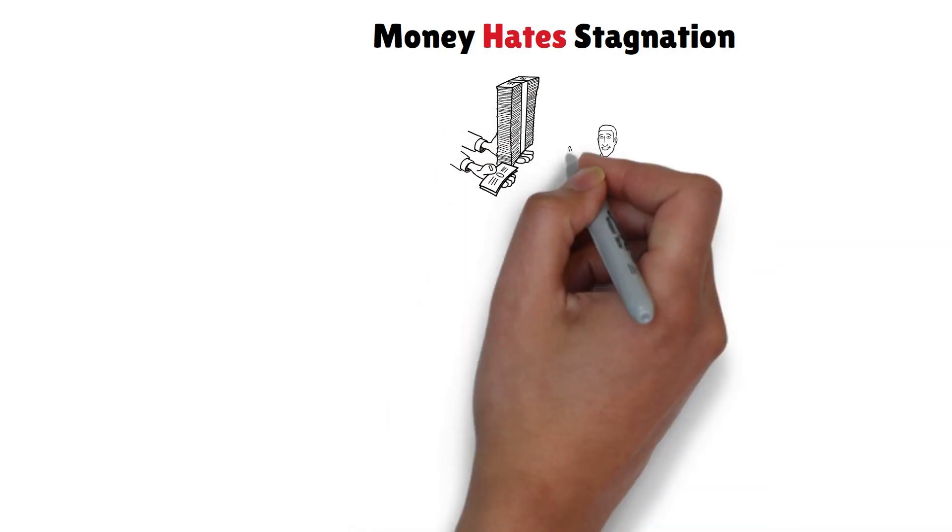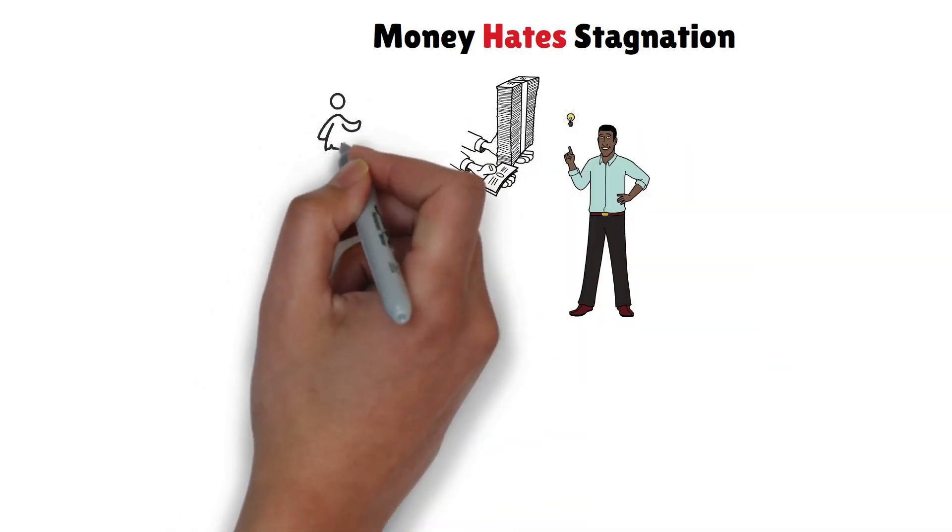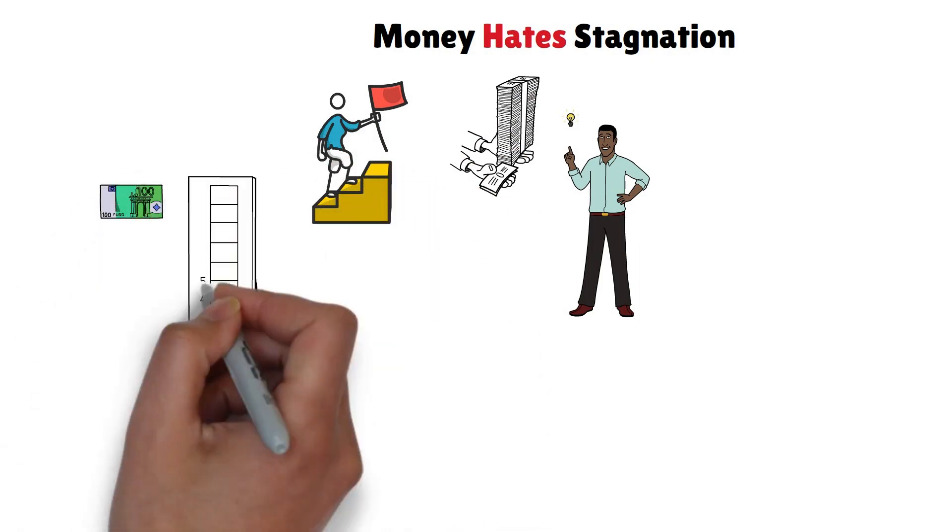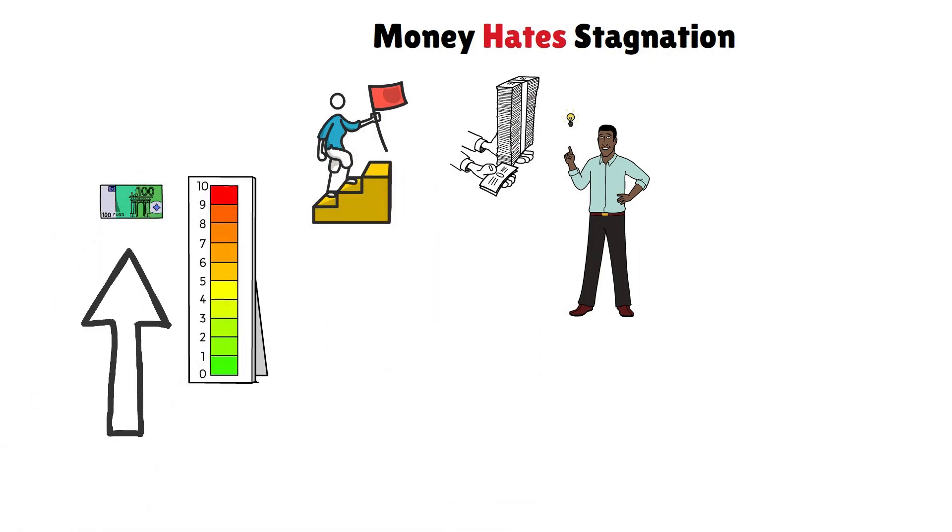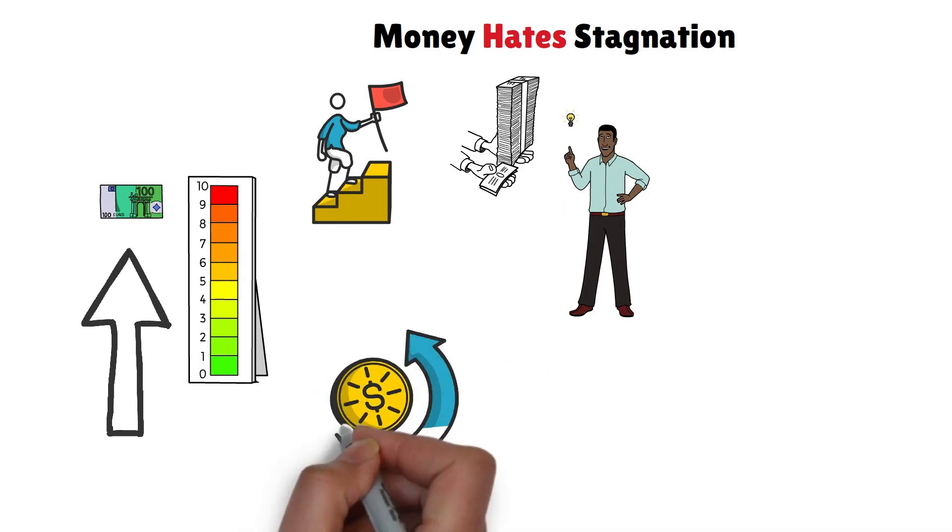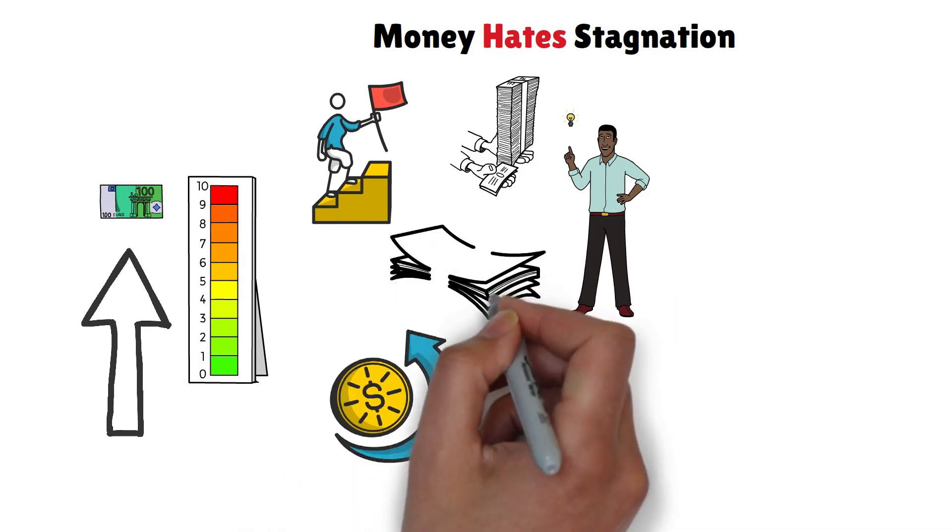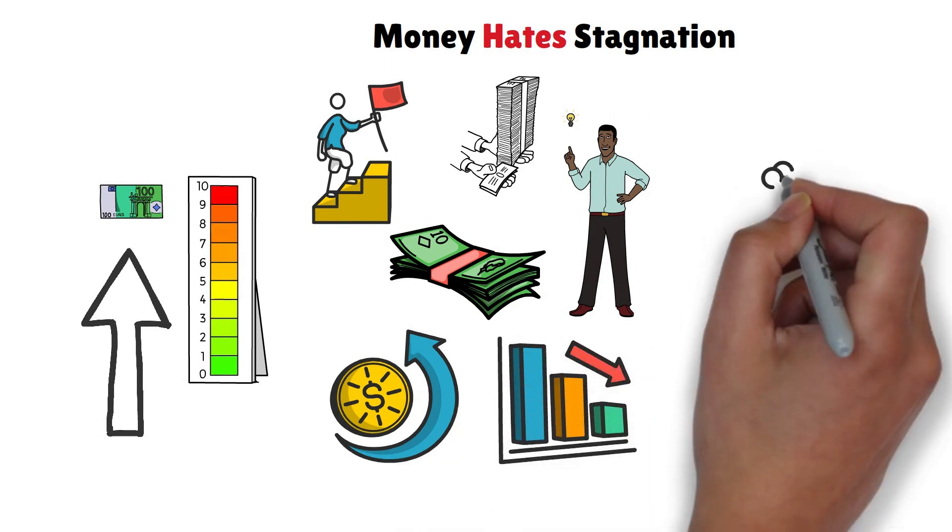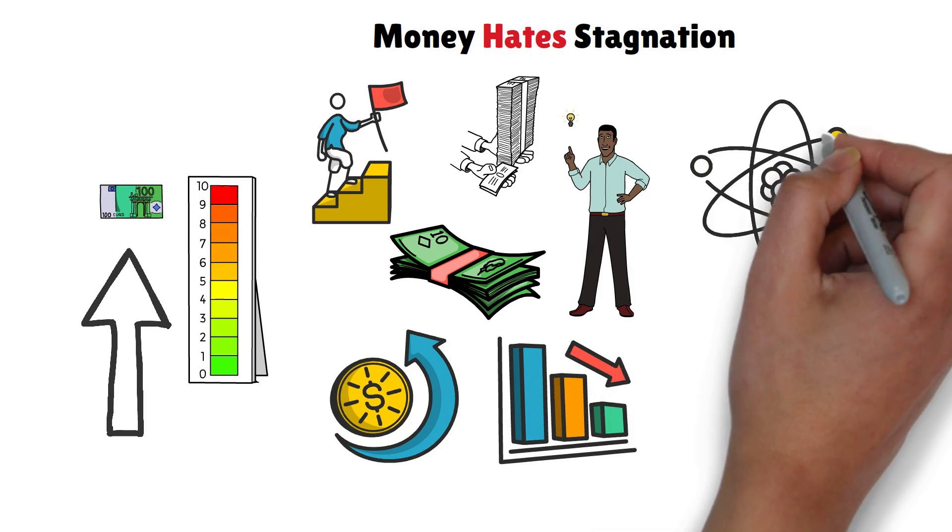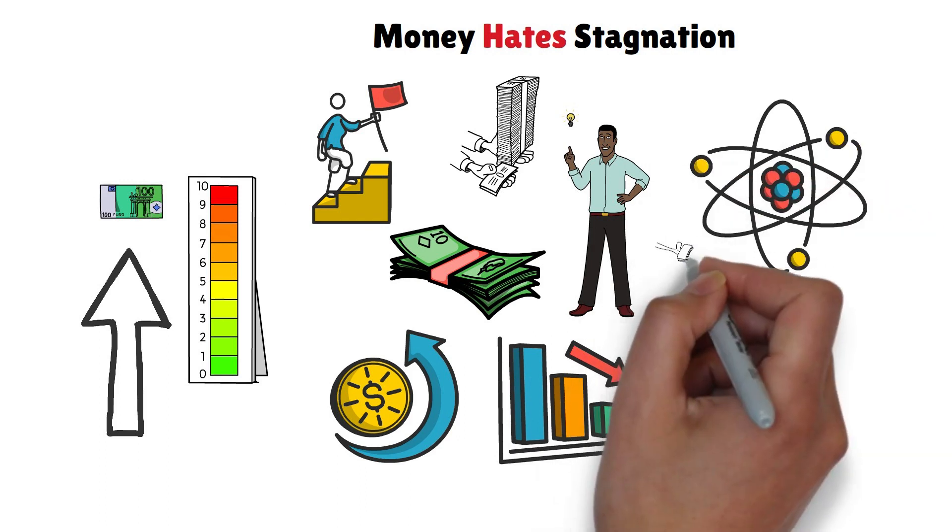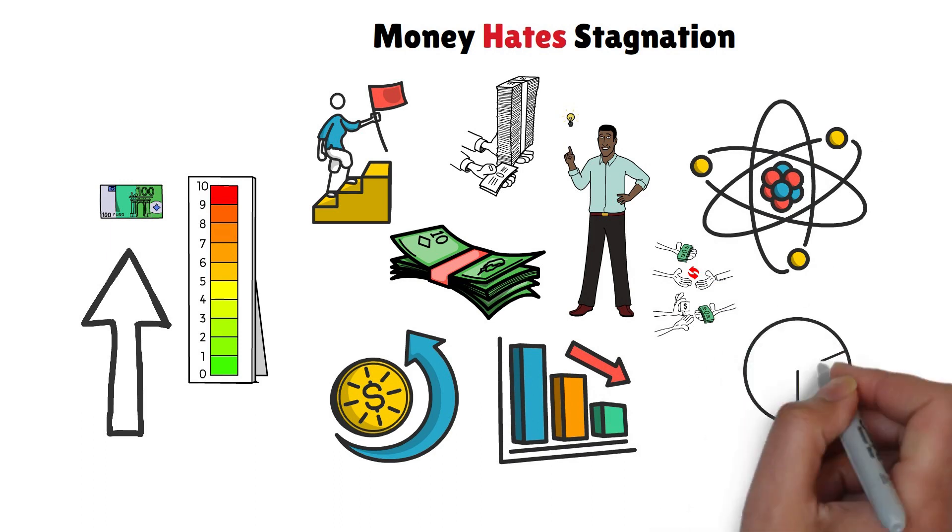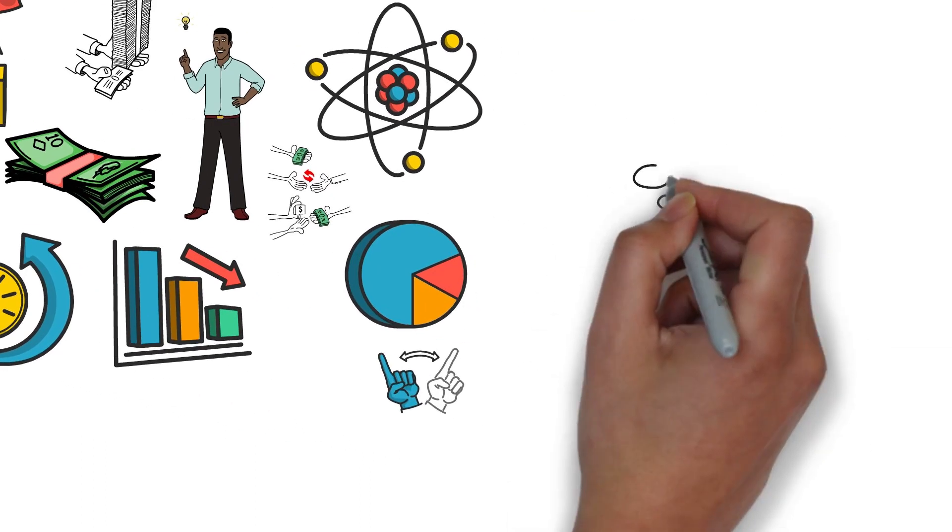Rule 8: Money hates stagnation. It's a curious but vital aspect of wealth. Just like people thrive on new experiences, money thrives on movement and purpose. Imagine you continually invest in the same business that doesn't generate profits. Your money becomes stagnant and ultimately results in losses. That's why diversifying your income sources is crucial. Money prefers to be invested in various areas, so you can watch your wealth grow from different directions.